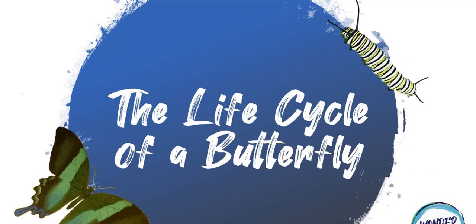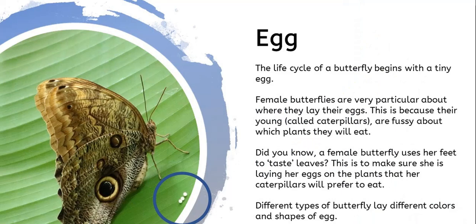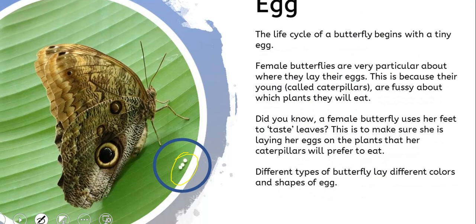The life cycle of a butterfly, just like most insects, starts with an egg. The egg is very tiny — you can see the tiny little egg here, and compared to the butterfly, they are super tiny. Female butterflies are particular about where they lay their eggs.